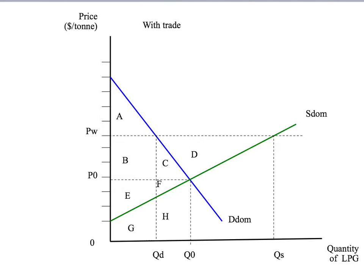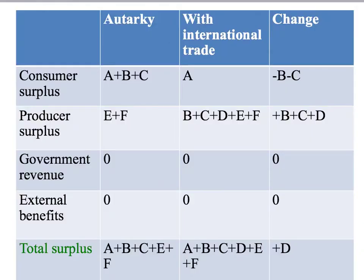What about consumers? They now consume QD and pay the higher price PW. So consumer surplus — the area under demand above the price consumers pay up to the quantity they consume — is now only area A. Notice that consumer surplus has fallen from A plus B plus C down to A. So the change to consumers is a loss of consumer surplus — they've lost B plus C.